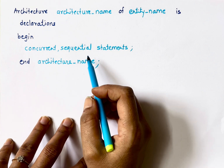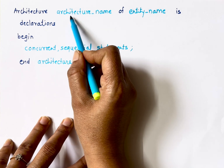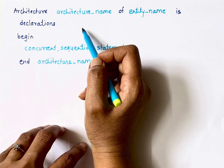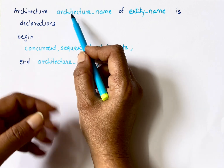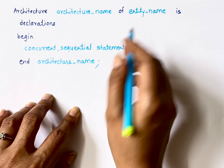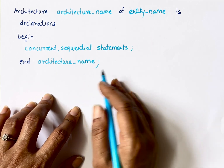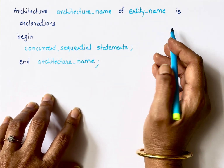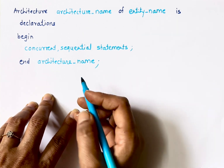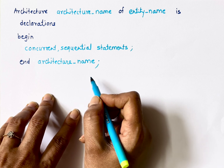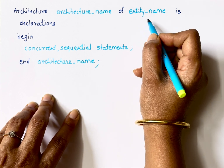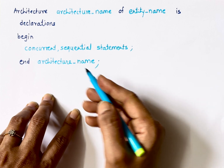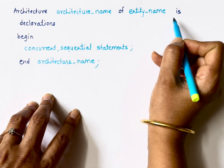This is the syntax for architecture. The first word is 'architecture', followed by the architecture name — same naming rules apply. Note that VHDL is case insensitive. The syntax is: 'architecture architecture_name of entity_name is'. This means I am writing this architecture for that entity, so it knows the data types of A, B, etc. Remember, for one entity we can write multiple architectures.